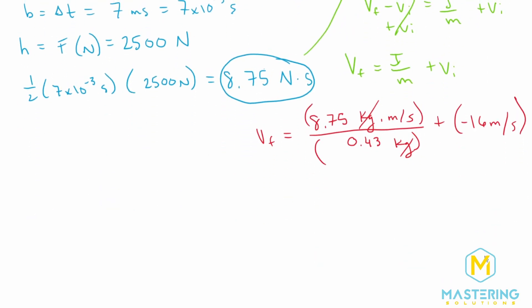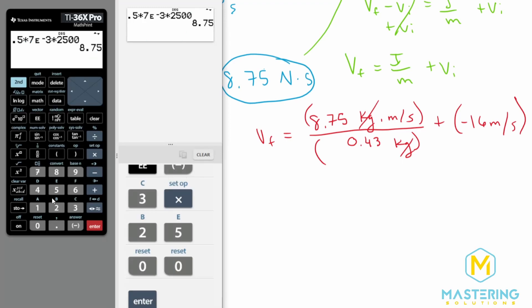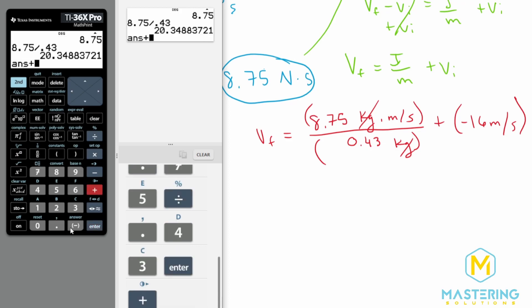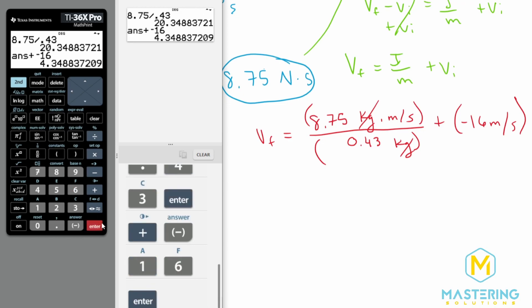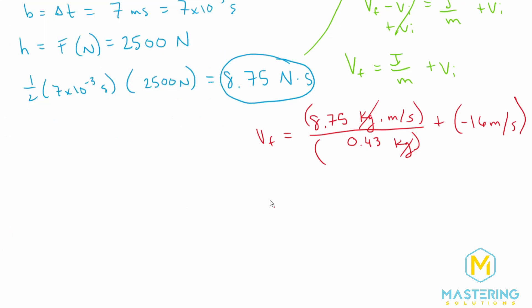And now all we have to do is plug this into our calculator. So 8.75 divided by 0.43, and then add negative 16, which gives us 4.3, a final velocity of 4.3 meters per second for the soccer ball.